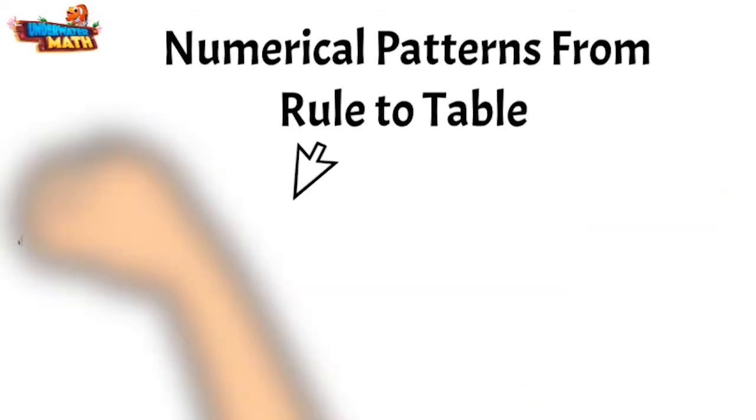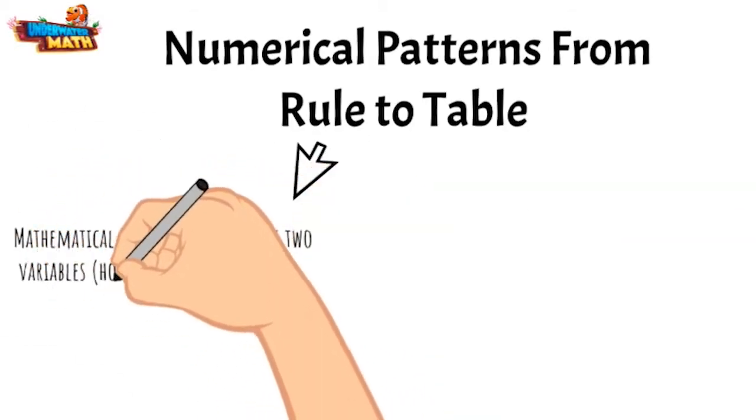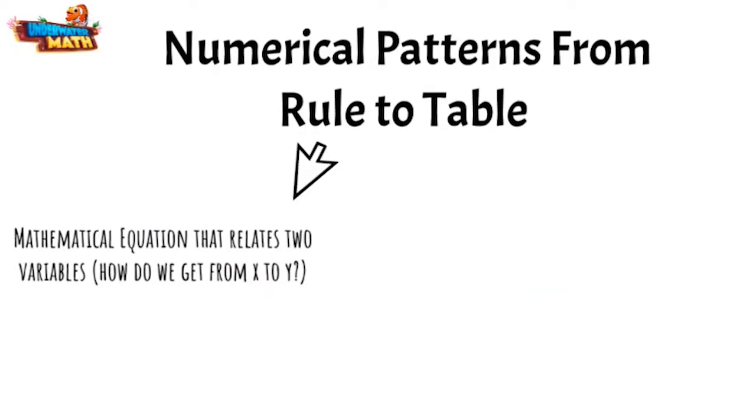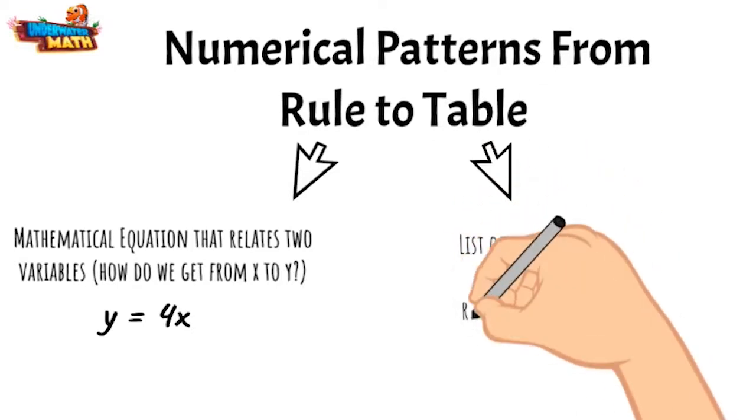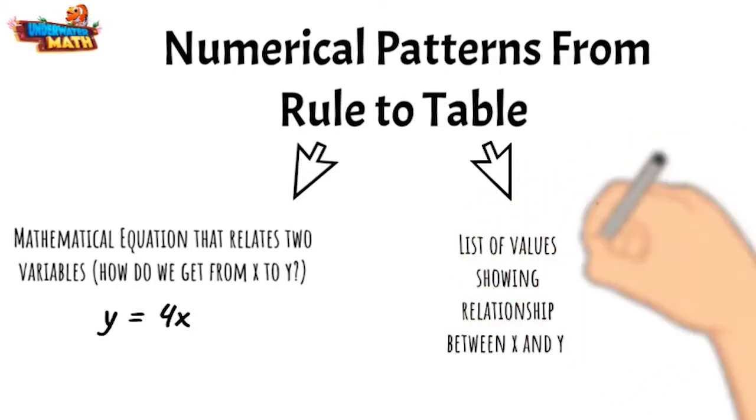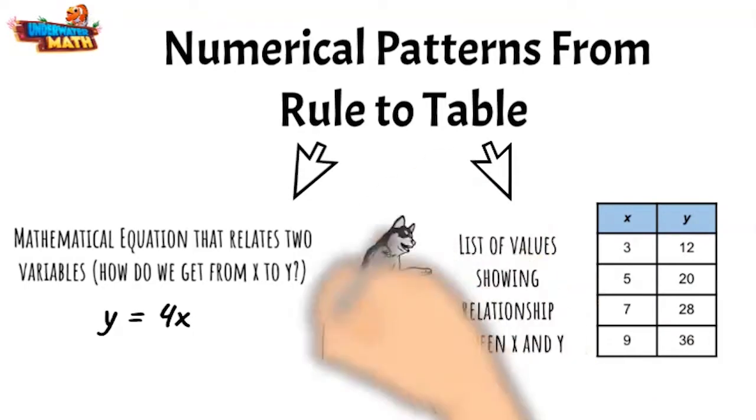A rule for a numerical pattern is just a mathematical equation that relates two variables. Specifically, it tells us how to get from x to y. A table for this pattern is a list of values showing that relationship. Murphy is jumping for joy, excited to practice finding a table when given a rule.